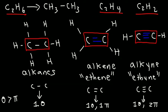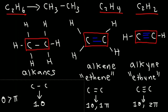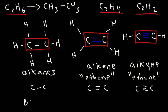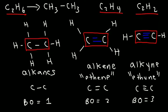Now let's talk about bond order. What is the bond order for a single bond, a double bond, and a triple bond? This one is pretty straightforward. For a single bond, the bond order is one. For a double bond, the bond order is two. And for a triple bond, the bond order is three.